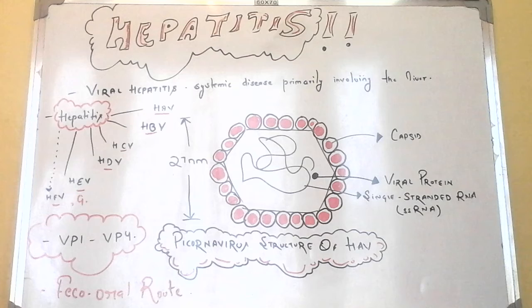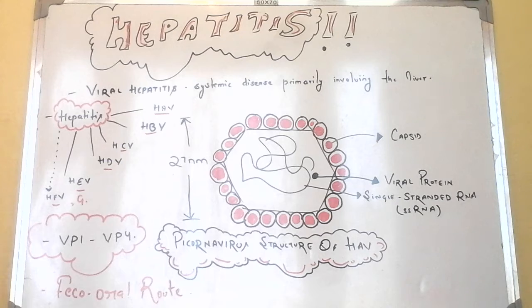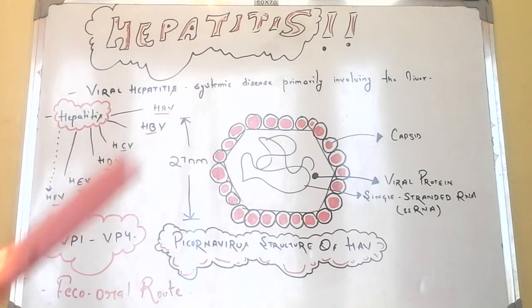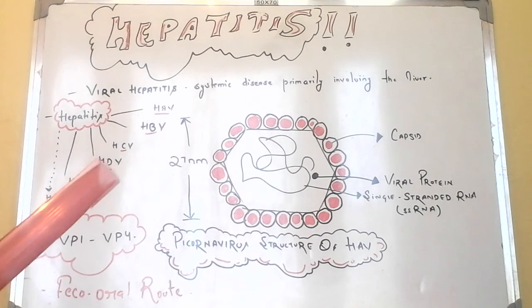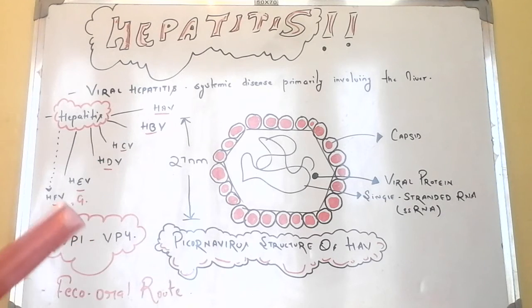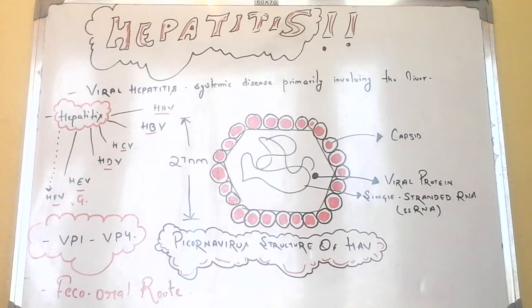Viral hepatitis is caused by hepatotropic viruses. Currently there are five main varieties of these viruses: Hepatitis A virus, B virus, C virus, Hepatitis D, Hepatitis E, and G as well. Since F is not so much described, we will simply talk about Hepatitis A in this video.